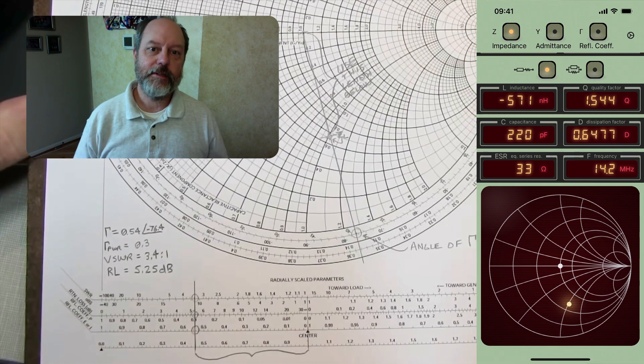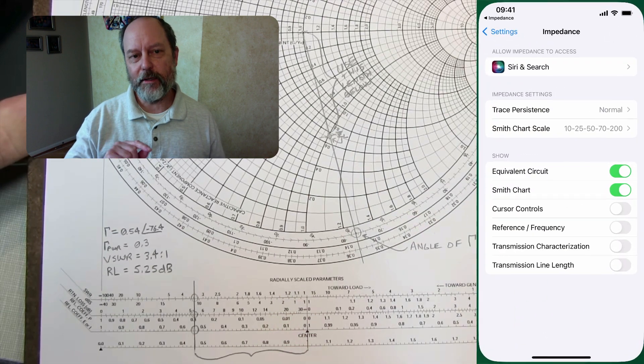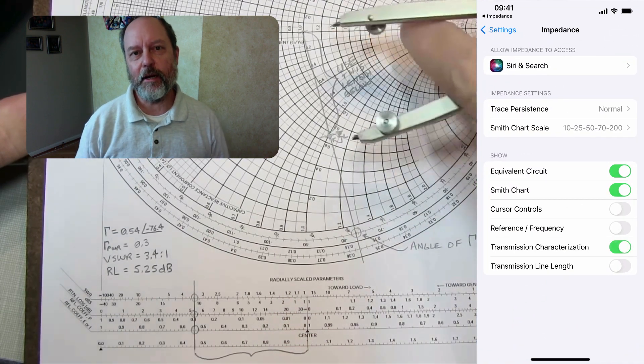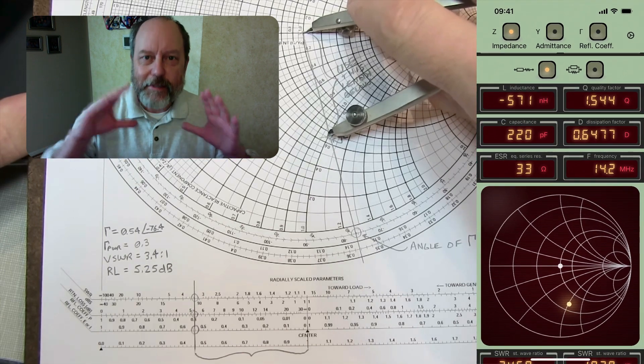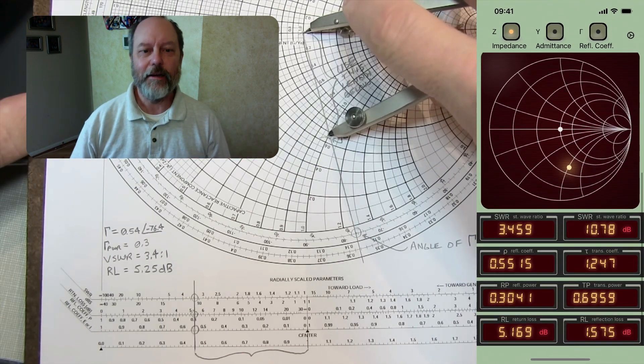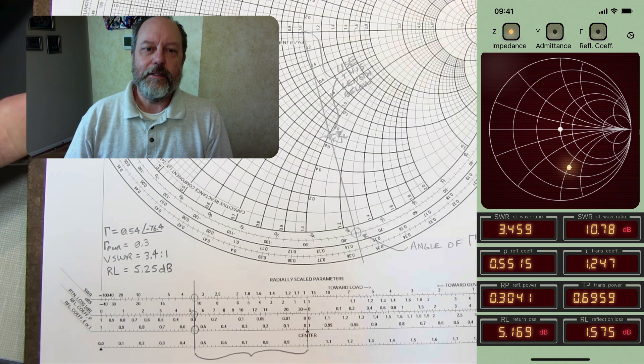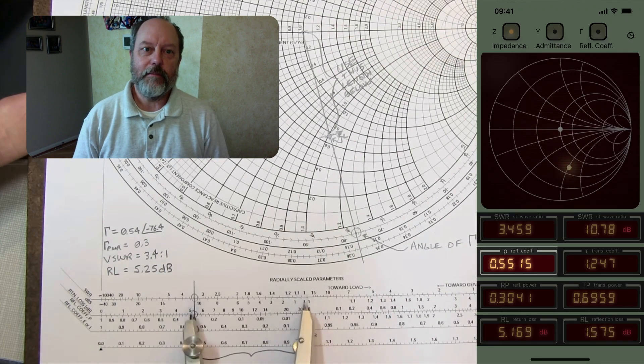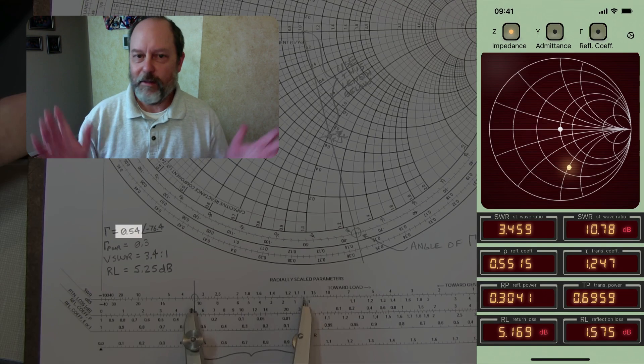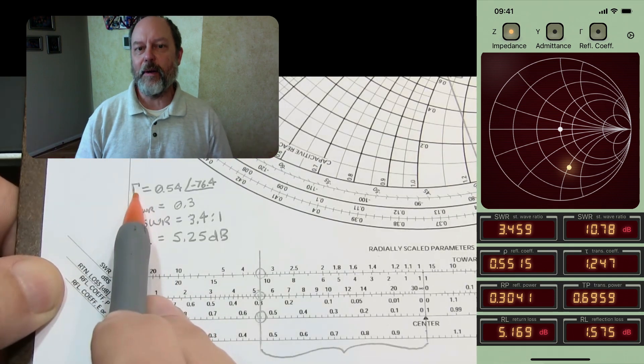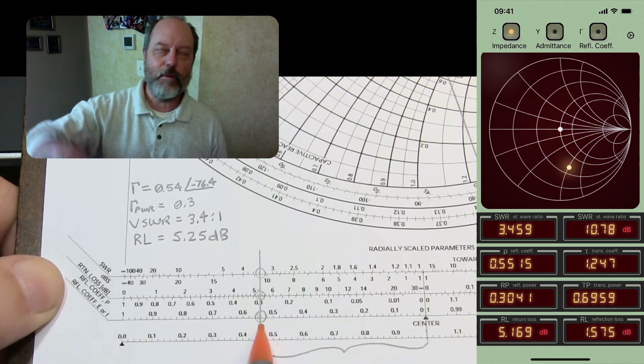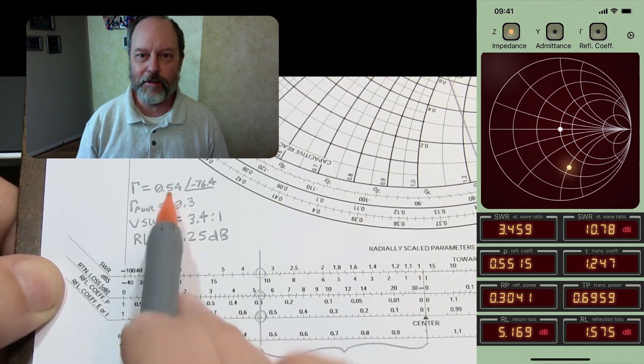Now Alan shows how you can just simply read these values off the bottom of the Smith chart as radially scaled parameters. In impedance converter, what I'm going to do is enable the transmission characterization view, and it'll appear below the Smith chart, and then you can see the same calculated values there. You can see that rho is calculated as 0.55 matching the value of 0.54 that Alan got. And you can also see that Alan's angle of minus 76.4 was the same as what we saw earlier in the reflection coefficient view.